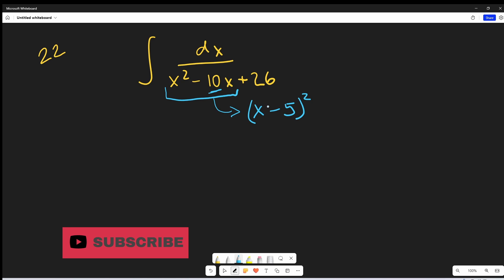So what I can do for this, I can write this as x minus 5 squared. If you square that out, you get x squared minus 10x plus 25. Well, we have a 26 here, so what we can do is just add 1. And so then this is going to be equivalent to our denominator. So let me just rewrite this whole thing. This is going to be dx over x minus 5 squared plus 1.